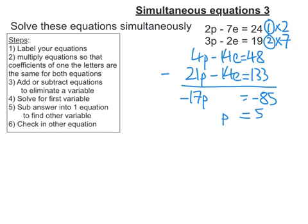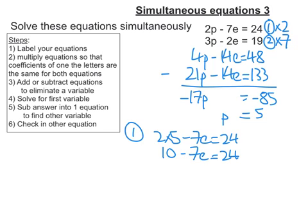Let's sub that into equation 1. We're going to get 2 times p, so that's 5, minus 7e equals 24. So, we get 10 minus 7e equals 24. Take away 10 from both sides, and we get negative 7e equals 14. Then, divide by negative 7, and we get e equals negative 2.